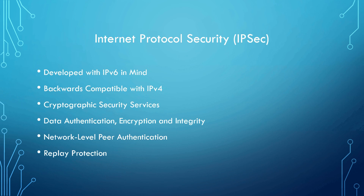One of IPv4's design flaws was that it lacked any type of native mechanism for ensuring data privacy and security during network transmission. Data transmission between two endpoints usually occurs through a series of unknown networks, where any information being transmitted is subject to interception or even being maliciously changed. This is where IPsec comes into play. IPsec uses cryptographic security services to protect communications over internet protocol networks. Some of the features that IPsec supports include data authentication, data encryption, data integrity, network-level peer authentication, and replay protection.